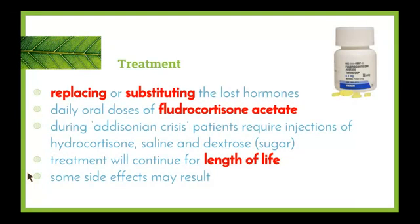Treatment usually involves replacing or substituting the lost hormones. Daily oral doses of fludrocortisone acetate tablets are taken every day. During an Addisonian crisis — where symptoms are significantly exacerbated — patients can require injections of hydrocortisone, saline, and dextrose (a form of sugar) to help balance fluids within the body. Treatment will need to continue for the length of the patient's life.